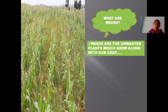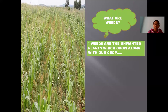We have grown the maize crop, and along with the maize, some unwanted plants have also grown. The plants shown are grass plants — these are the unwanted plants. All these unwanted plants are named as weeds. Weeds are the unwanted plants which grow along with our crop. I hope you have understood what weeds are — all the unwanted plants are called as weeds.